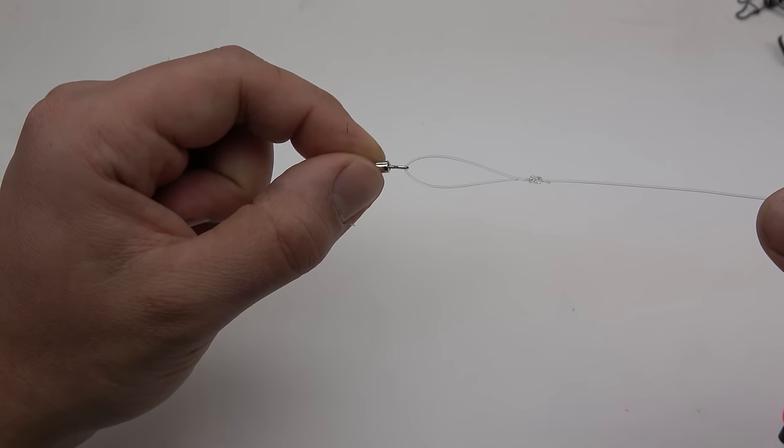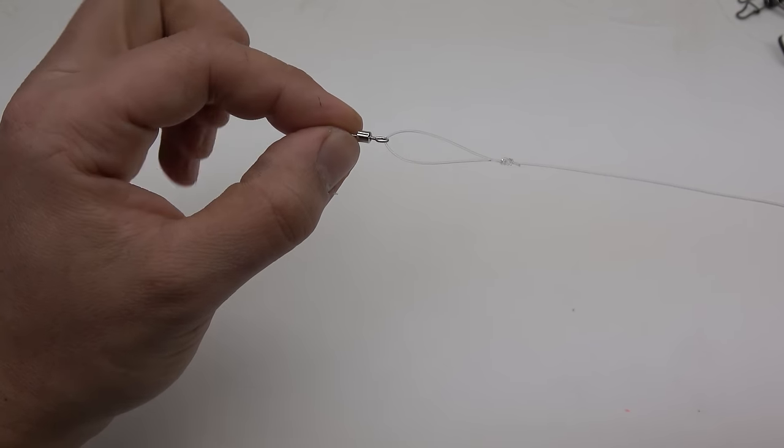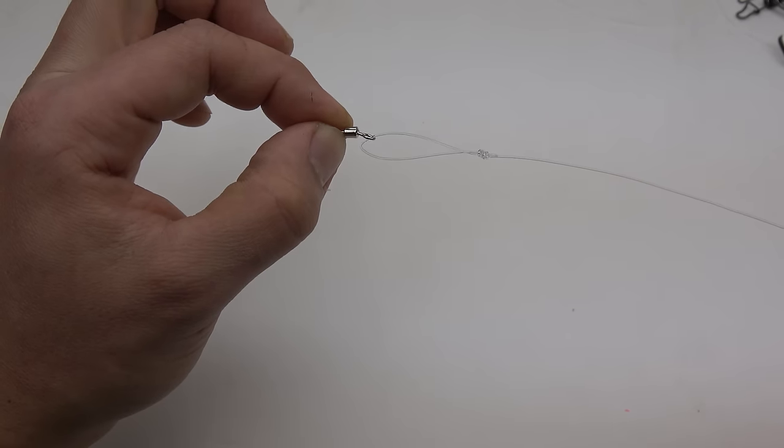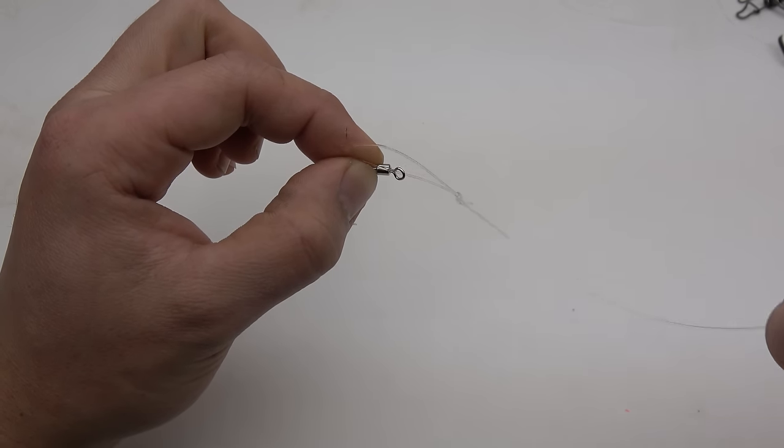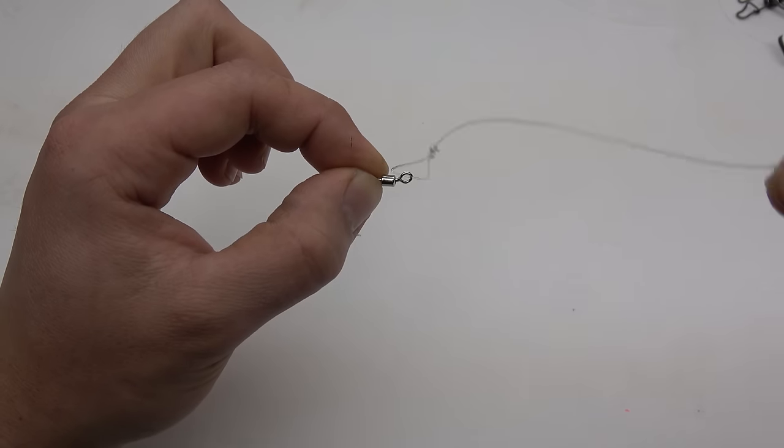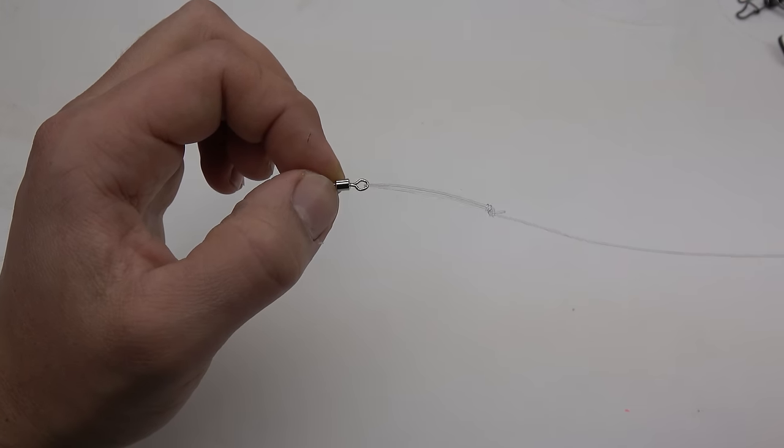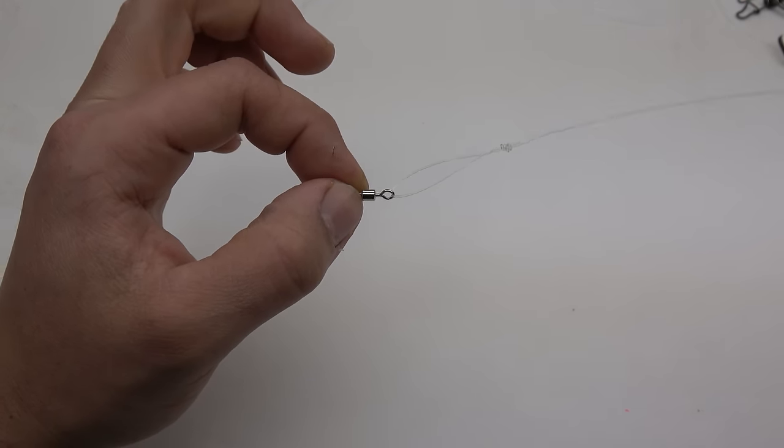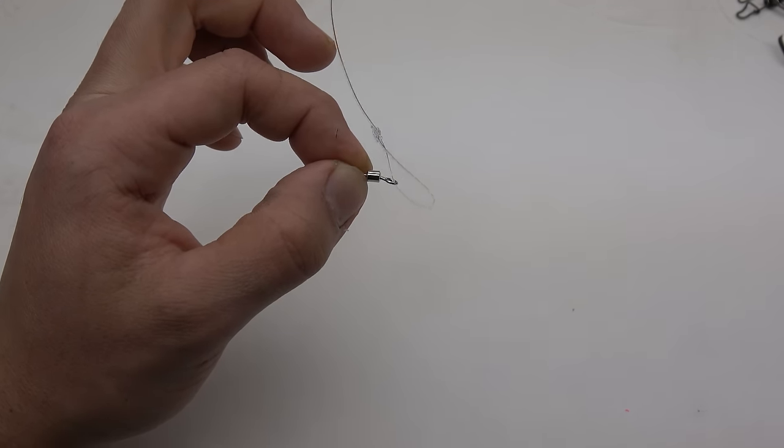At the end here we have a figure eight knot. I prefer the figure eight knot to connect to my swivel because of the fantastic range of motion it has. This means your bait will move naturally in the current as well as provide minimal resistance when the fish picks up your bait because it moves around so well.